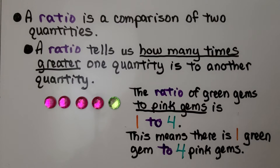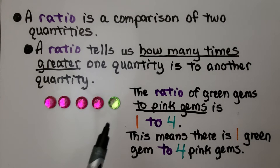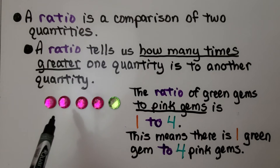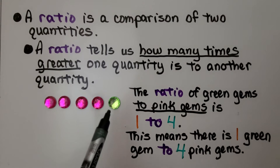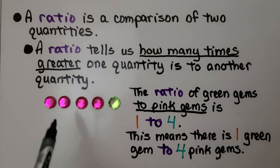A ratio is a comparison of two quantities. A ratio tells us how many times greater one quantity is to another quantity. The ratio of green gems to pink gems is one to four. This means there is one green gem and four pink gems.